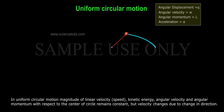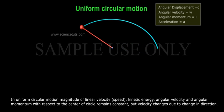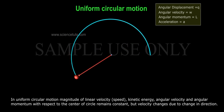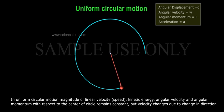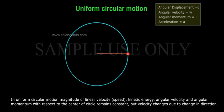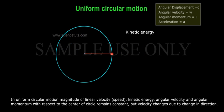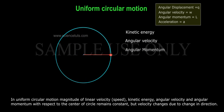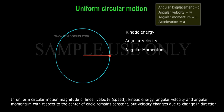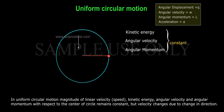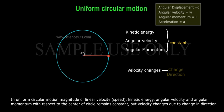In uniform circular motion, the magnitude of linear velocity (speed), kinetic energy, angular velocity, and angular momentum with respect to the center of the circle remains constant. But velocity changes due to change in direction.